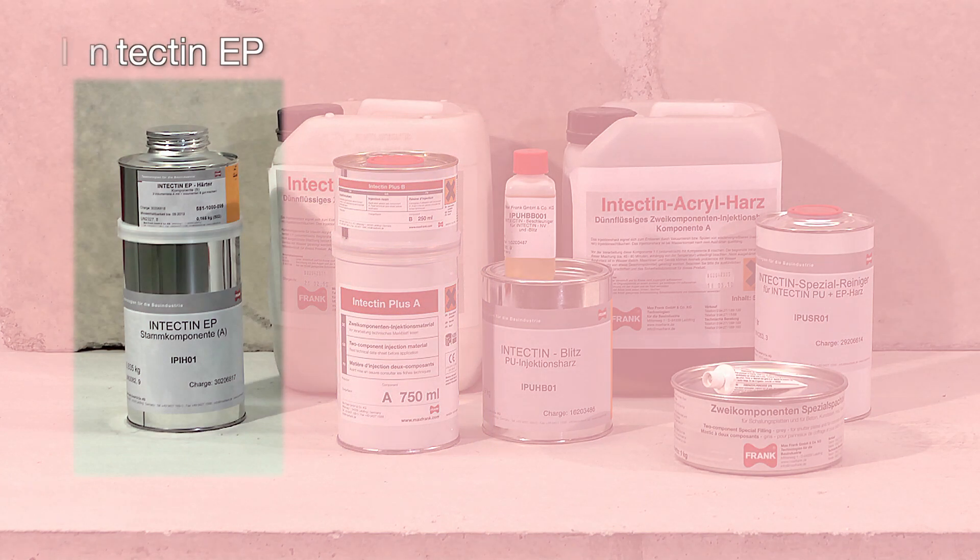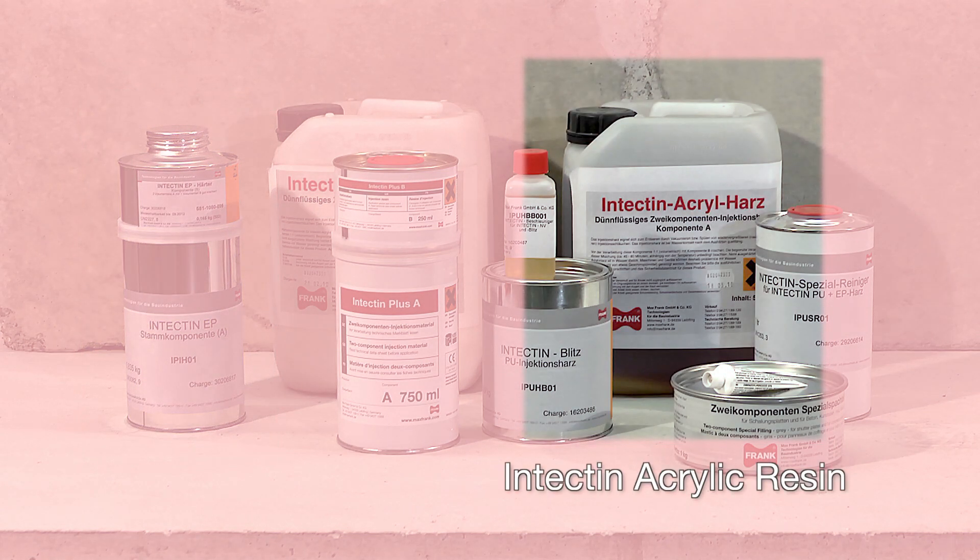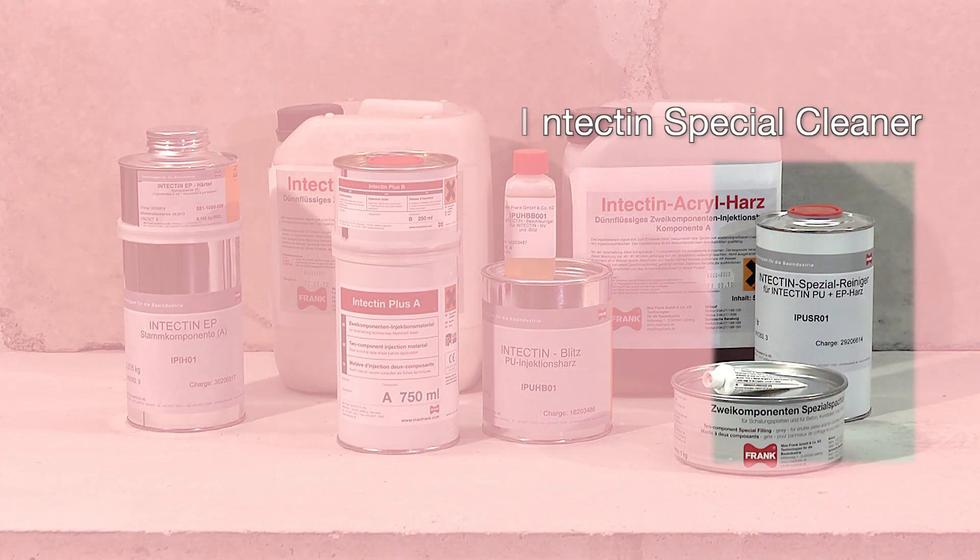Intectin EP: epoxy resin for sealing of dry and moist cracks or joints. Intectin acrylic resin: working at low temperatures down to 0 degrees Celsius. Intectin Special Cleaner: suitable for the cleaning of PU and EP resins.